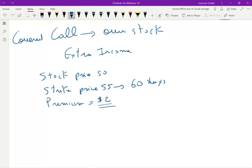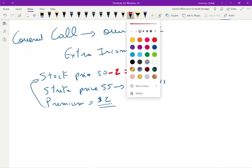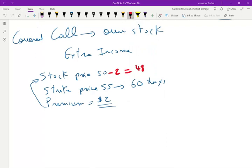And by getting $2, basically, think about it, by getting this $2 premium, what you did is, in a sense, you reduced your stock basis to 48. So now your basis, your net cost is now $48. Basically, you paid 48. Your net cost is now $48.